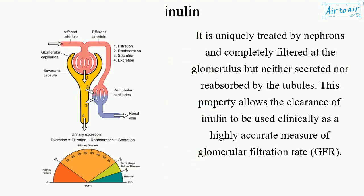It is uniquely treated by nephrons and completely filtered at the glomerulus but neither secreted nor reabsorbed by the tubules. This property allows the clearance of inulin to be used clinically as a highly accurate measure of glomerular filtration rate.